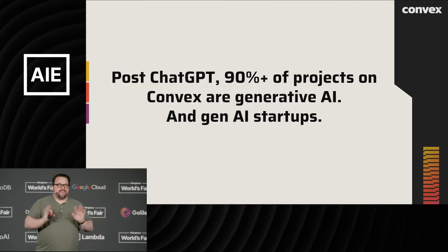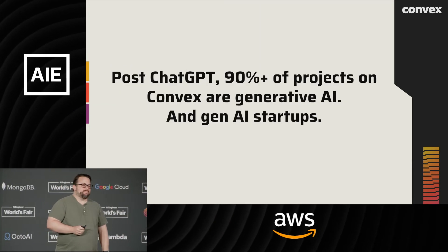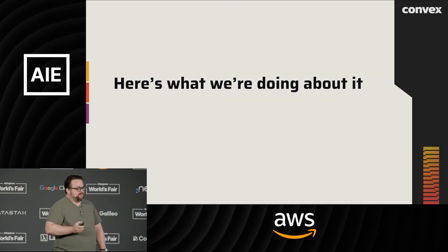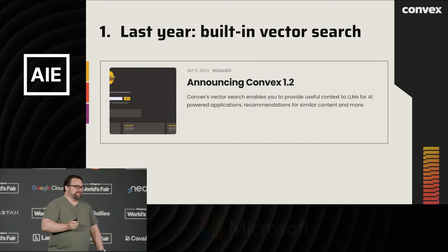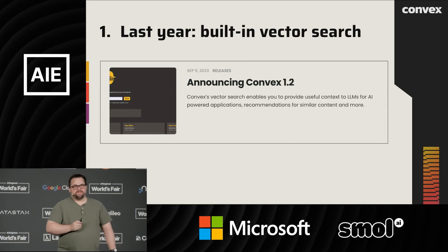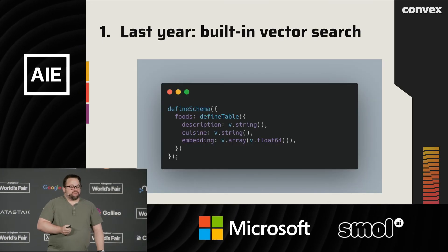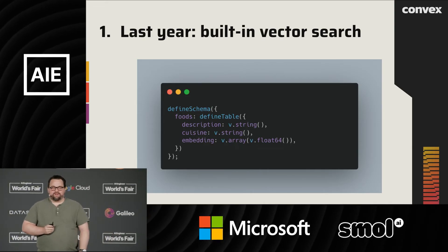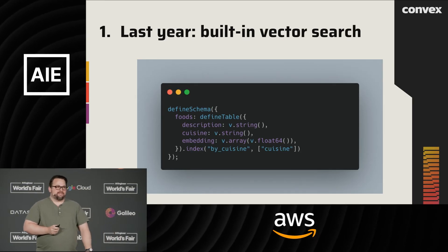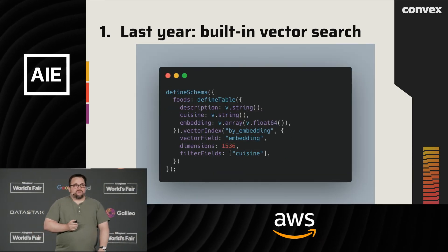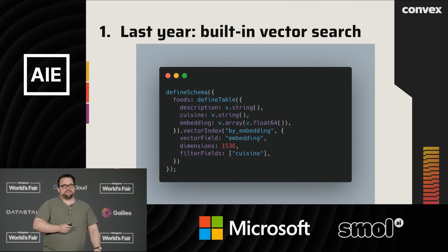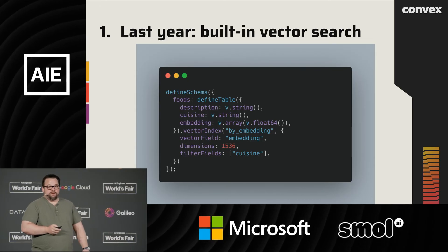Post-ChatGPT boom, 90-plus percent of projects on Convex are generative AI, and a lot of generative AI startups are building on us. So here's what we're doing about it. We got a lot of feedback that one of those steps was always vector indexing. Developers said: you already allow us to add indexes to fields — could you allow us to add vector indexes? So we said sure, and rolled that out late last year. It's being used very broadly now by projects on Convex.